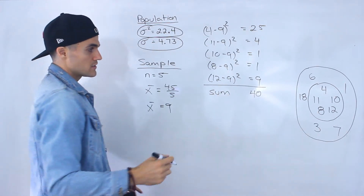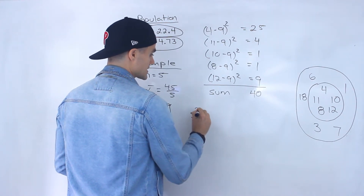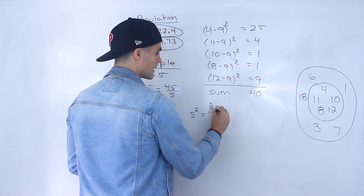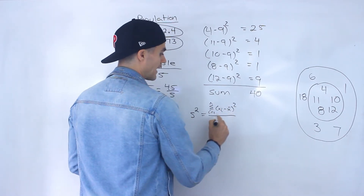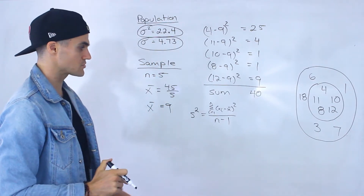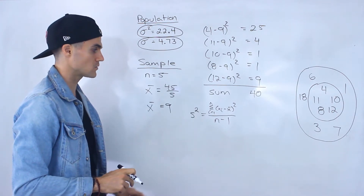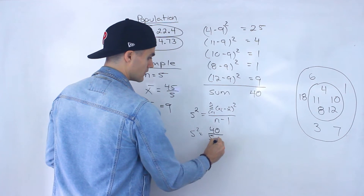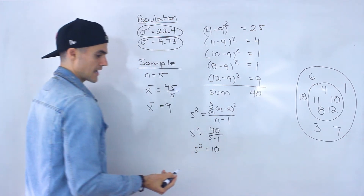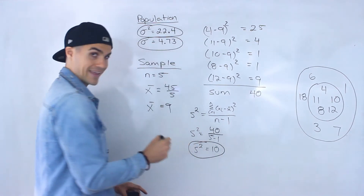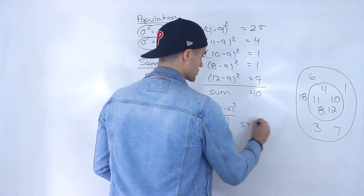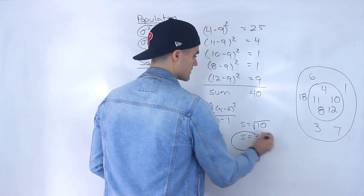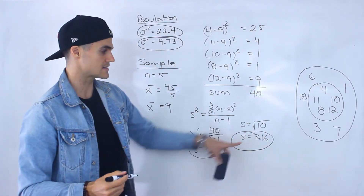Once we have the sum of squared deviations, we can find the sample variance. The sample variance formula divides by n minus 1 — as mentioned in the previous video. So it's 40 divided by (5 − 1), giving a sample variance of 10. The sample standard deviation is the square root of 10, which is approximately 3.16.